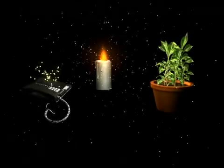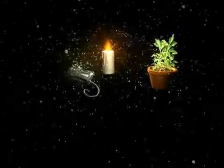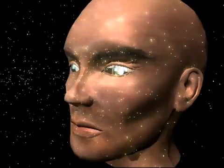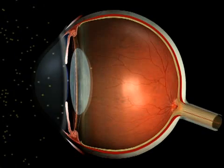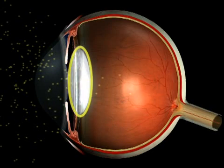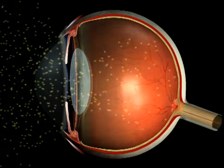To better understand vitreoretinal disorders, we must first examine how vision works. In order to see, a light source is required — without light, everything is black. Light emits particles called photons which bounce off solid objects before reaching the eye. The tissue they travel through must be transparent: first the cornea at the front of the eye, then the crystalline lens behind the pupil, then the vitreous body in the middle of the eye.